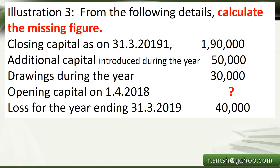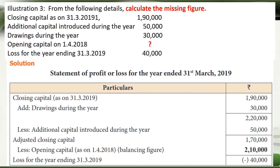Illustration 3: From the following details, calculate the missing figure. Opening capital on 1st April 2018 is the missing figure. Closing capital, additional capital introduced, drawings, and loss for the year ending are given. Using the formula: add the closing capital, minus the additional capital introduced, and add the drawings during the year — the resulting figure is the opening capital. Accordingly, we get 2,10,000 as the opening capital.